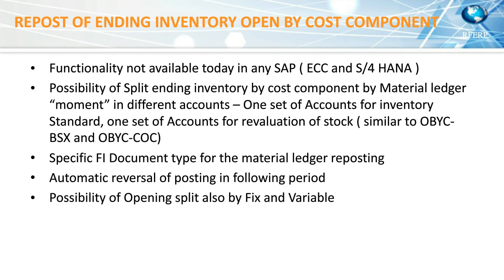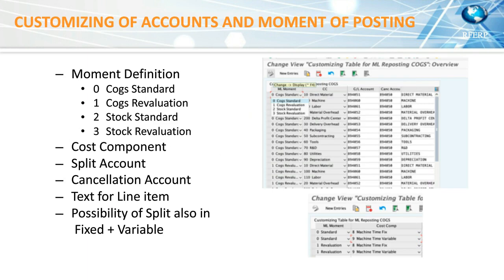The advantage is it works similar to material ledger. The post-enclosing of inventory reverses the following month, because when material ledger closes the month, it opens it the following month. This functionality does the same — closes the month and opens it the following day, so you always have the stock evaluated with the standard. There is also the possibility to split fixed and variable separately. A customized table tells you the moment — COGS standard, COGS revaluation, stock standard, stock revaluation — and you choose which cost component to map to which GL account.